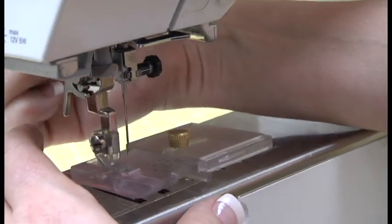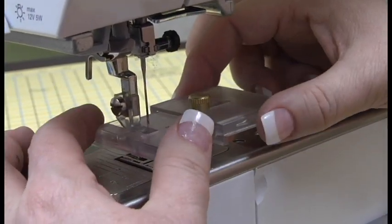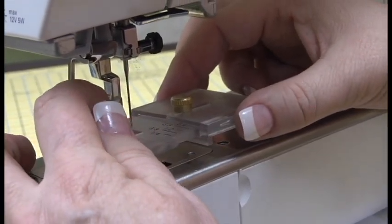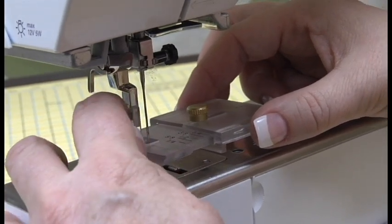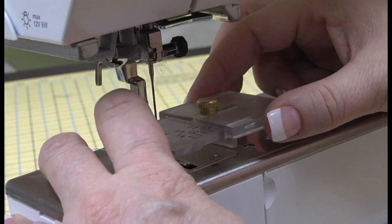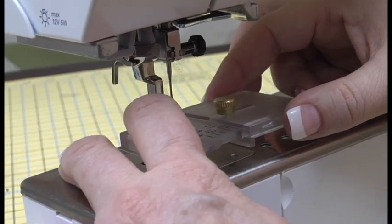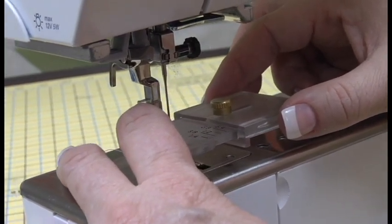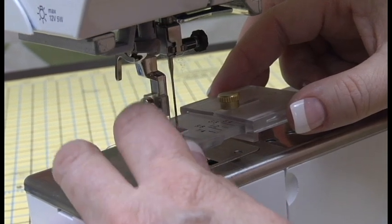This guy here—this is our low shank adapter, not snap-on adapter, with our ankle number one. In the documentation you'll see I talk about the ankle number one for the Bernina. It's a short shank machine. With that on there, this goes on. Now how do we take it off? We can wiggle, wiggle, wiggle—that comes off.